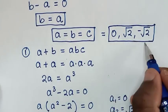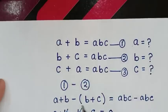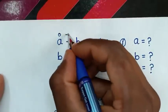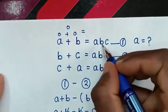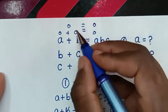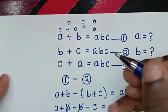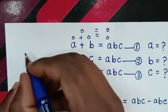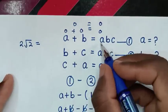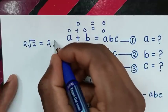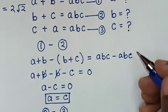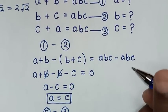To verify: checking equation 1 with A equals 0 gives 0 plus 0 equals 0 times 0 times 0, which is 0 equals 0 — correct. Checking with A equals square root of 2: square root of 2 plus square root of 2 is 2 square root of 2, and square root of 2 times square root of 2 times square root of 2 is also 2 square root of 2 — left and right sides are equal, confirming A, B, C can be 0, square root of 2, or negative square root of 2.